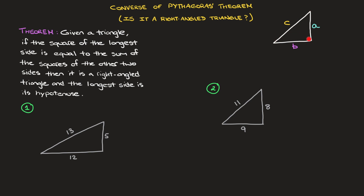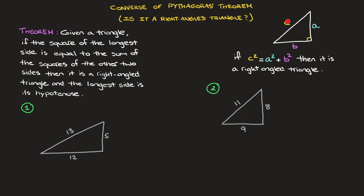The right angle is therefore opposite the hypotenuse and would be right here. Remember, our starting point is just a triangle — we don't know whether or not it's a right-angled triangle, and C is its longest side length. This theorem states that if C squared is equal to A squared plus B squared, then it's a right-angled triangle, and the right angle is always opposite the hypotenuse. If on the other hand we find that C squared isn't equal to A squared plus B squared, then the triangle isn't a right-angled triangle, and the longest side length isn't a hypotenuse, since only right-angled triangles have one.